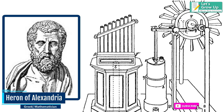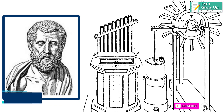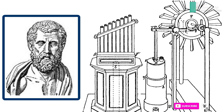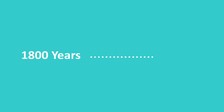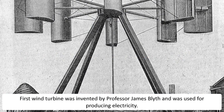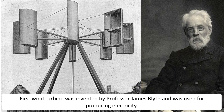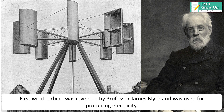There are many debates regarding the inventor of the first windmill. This continued for more than 1,800 years, until in 1887, the first wind turbine was invented by Professor James Blythe, and was used for producing electricity.